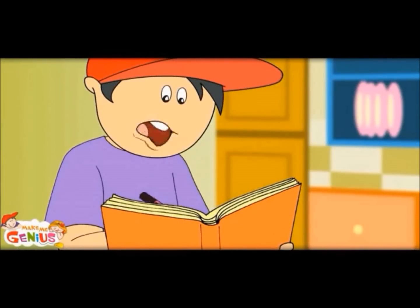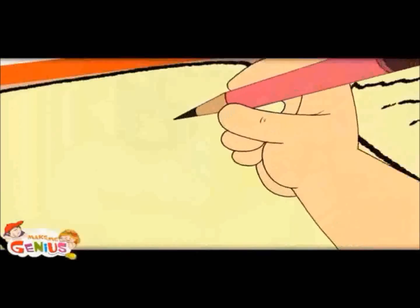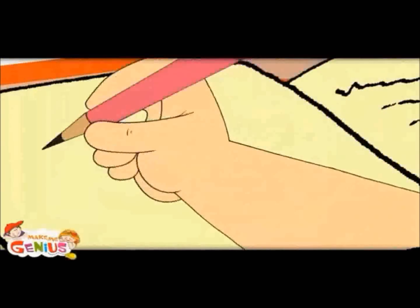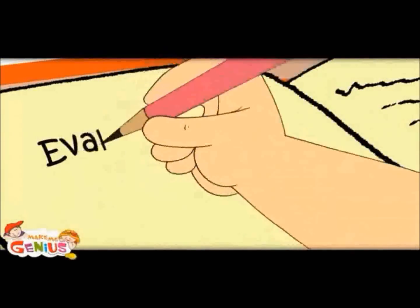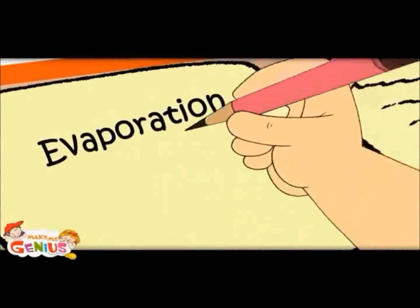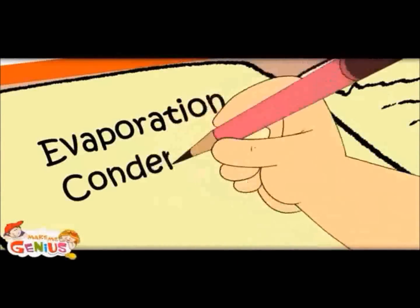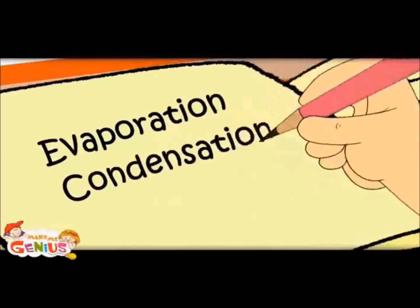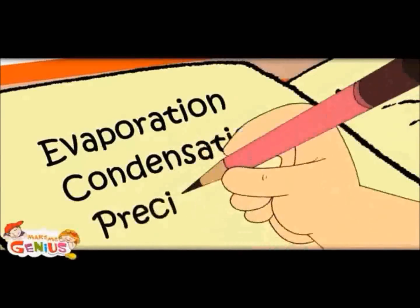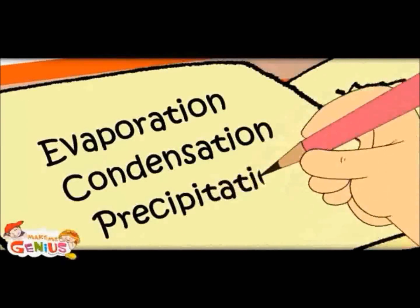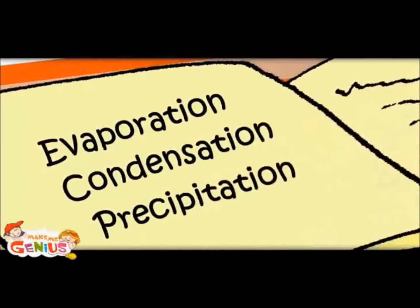Let me note down how rain happens. First, evaporation happens, then water molecules come close and condensation happens. Then drops become bigger and heavier and precipitation happens.